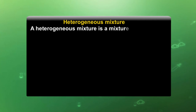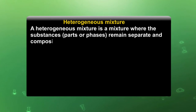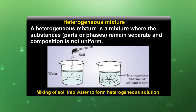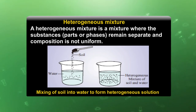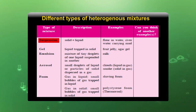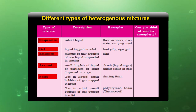Another type of mixture is the heterogeneous mixture — the reverse of homogeneous. In a heterogeneous mixture, substances or phases remain separate and the composition is not uniform. A suitable example is taking a spoonful of soil or sand and dissolving it in water — both components remain separated from each other. Examples of heterogeneous mixtures include suspensions, gels, emulsions, aerosols, and foams.